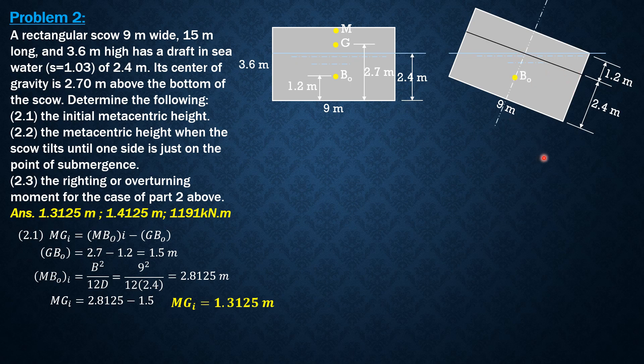This is the point of symmetry, so half of 9 is 4.5. B₀ is here; it now shifts to B₀ prime. This is now the new position of the metacenter.